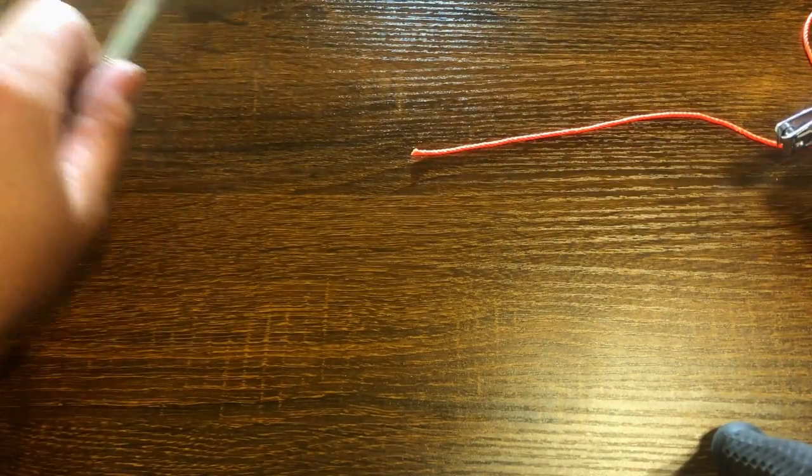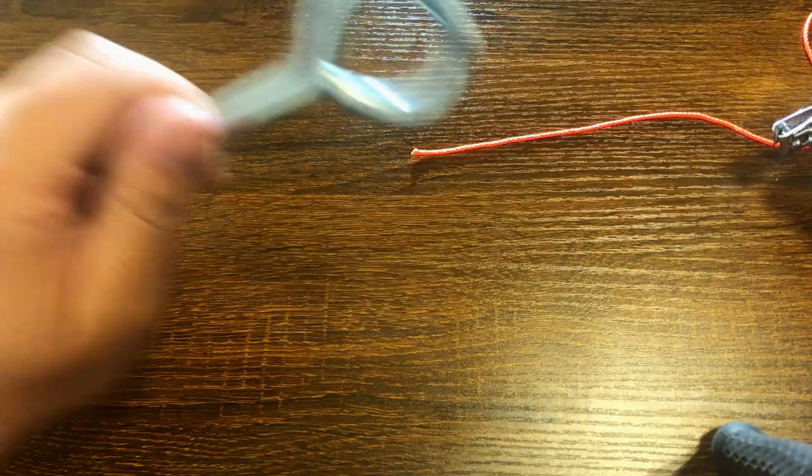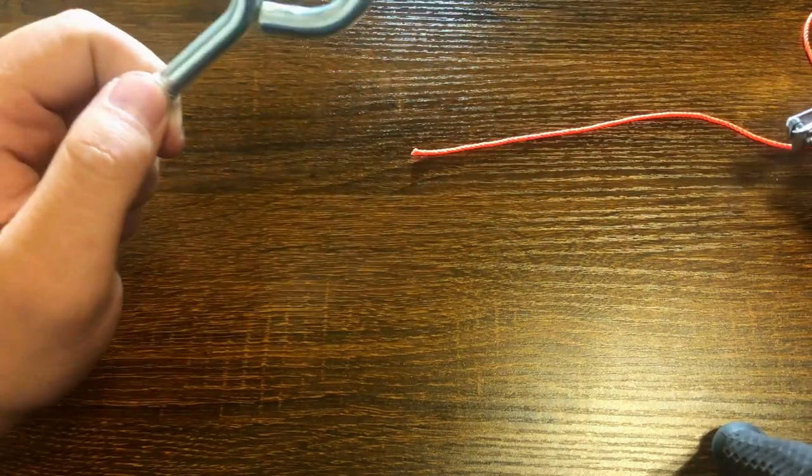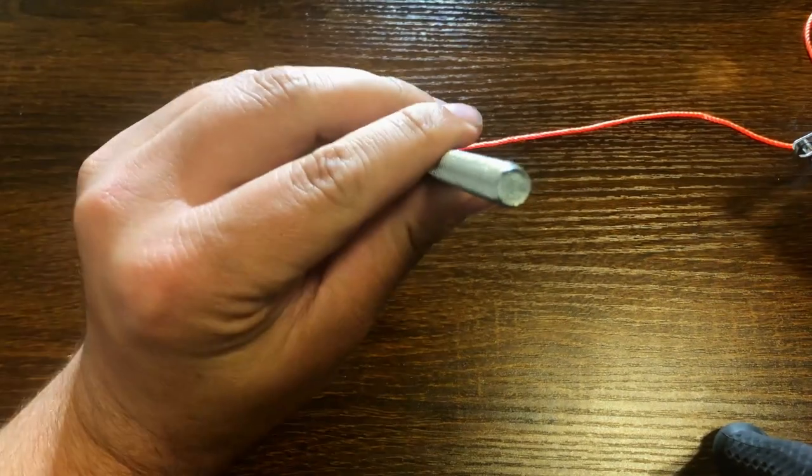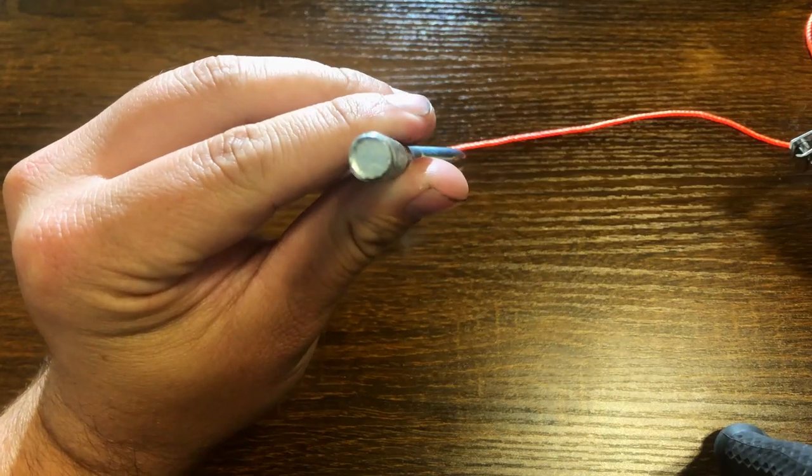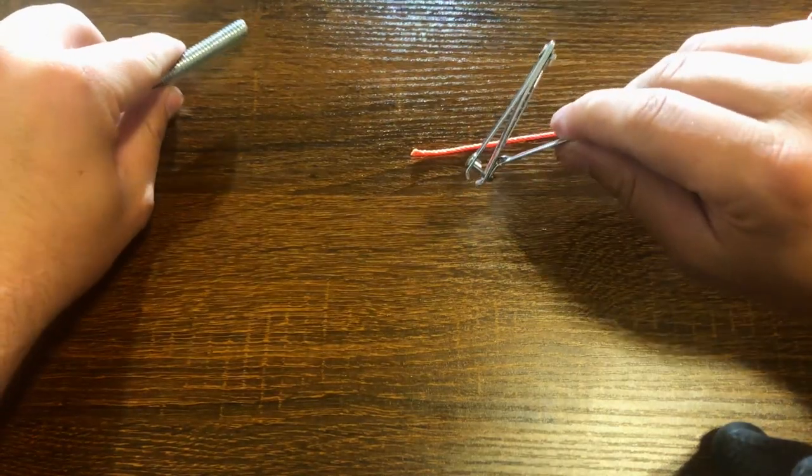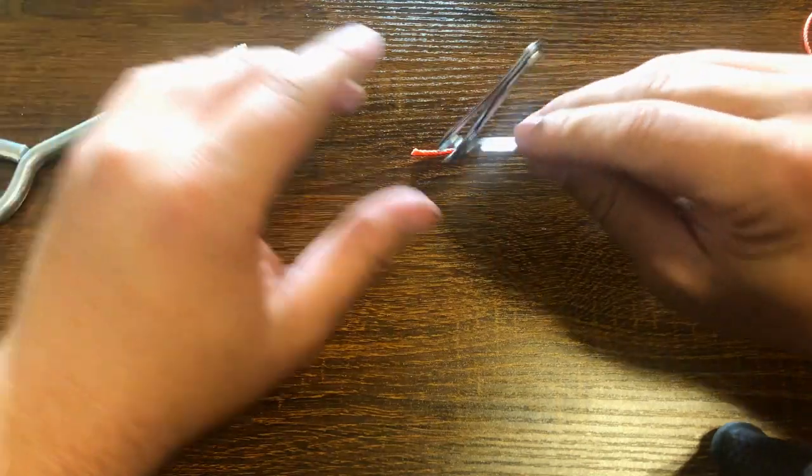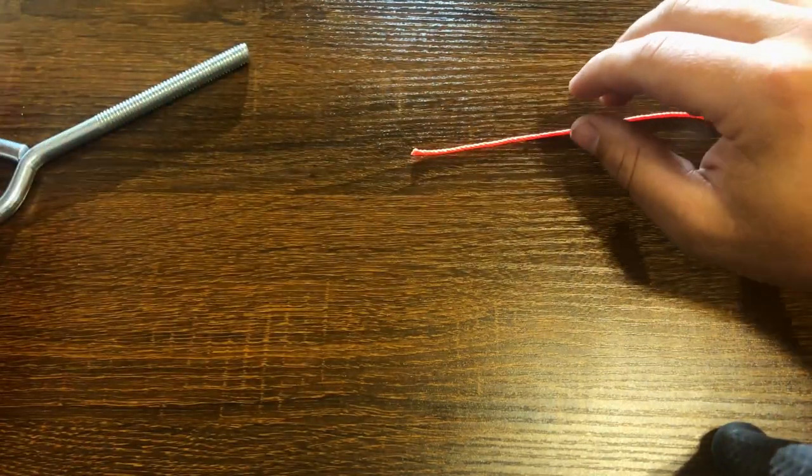Alright so for the Arbor Knot you're gonna need, oh you don't really need this. Well we can use it for these purposes. We'll just use this end as our spool side. That's what we'll do. Some clippers or some scissors or something. In this case I have clippers.